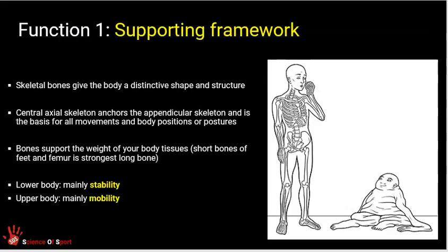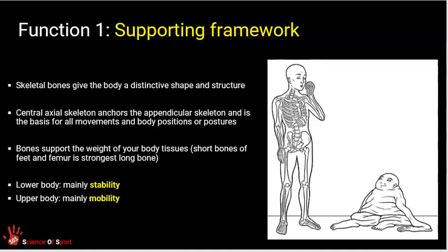The first function: if we don't want to basically be a mess of flesh and organs, we need a supporting framework. Our skeletal system gives us the distinct shape and structure that holds us upright or in different sporting positions. It is a stabilizing framework with which we can support organs within and attach bones externally.